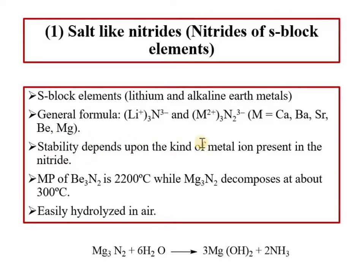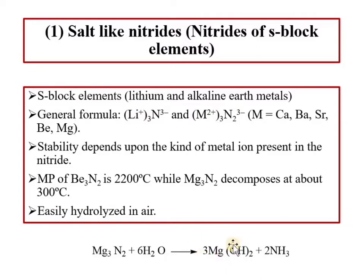Stability depends on which metal ion is present. For example, the nitride of beryllium has a melting point of 2200 degrees centigrade, while M₃N₂ types have much lower stability and decompose at around 300 degrees centigrade. Stability varies element to element. Nitrides are easily hydrolyzed in air; for example, magnesium nitride reacts with water, and hydrolysis can occur in air.